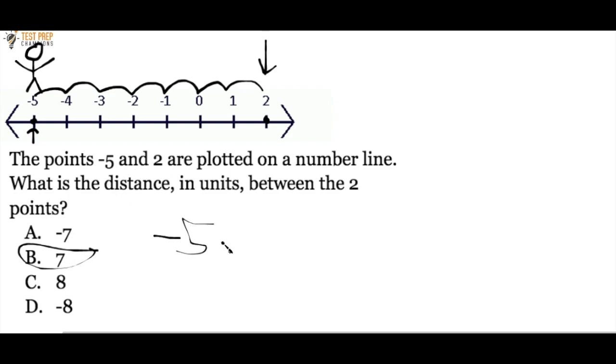Negative 5 minus 2. Negative 5 minus 2 is negative 7. And we want to do the absolute value, so negative 7 is going to become positive 7.